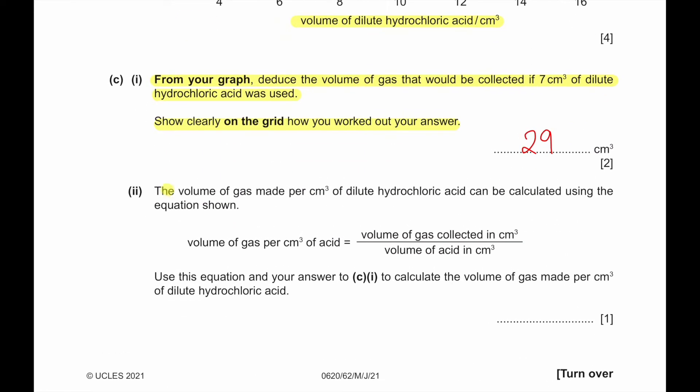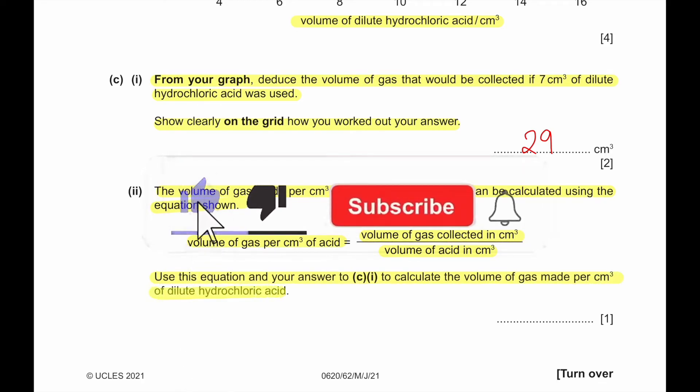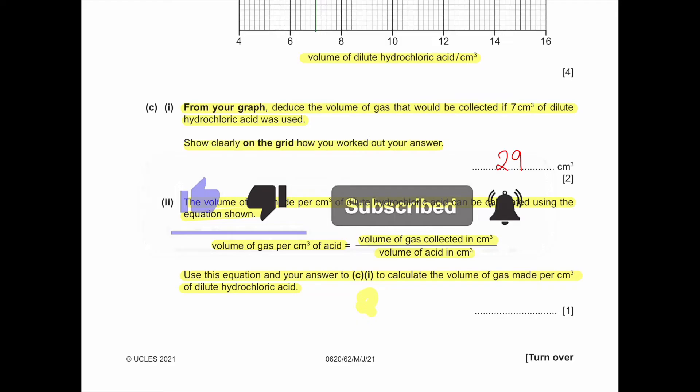Part 2. The volume of gas made per cm³ of dilute hydrochloric acid can be calculated using the equation shown. Volume of gas per cm³ of acid equals volume of gas collected in cm³ divided by volume of acid in cm³. Use this equation and your answer to C1 to calculate the volume of gas made per cm³ of dilute hydrochloric acid. Since our gas volume collected is 29, then we can divide it by 7, which is the volume of hydrochloric acid used to obtain that. And 29 divided by 7, the answer is 4.14.